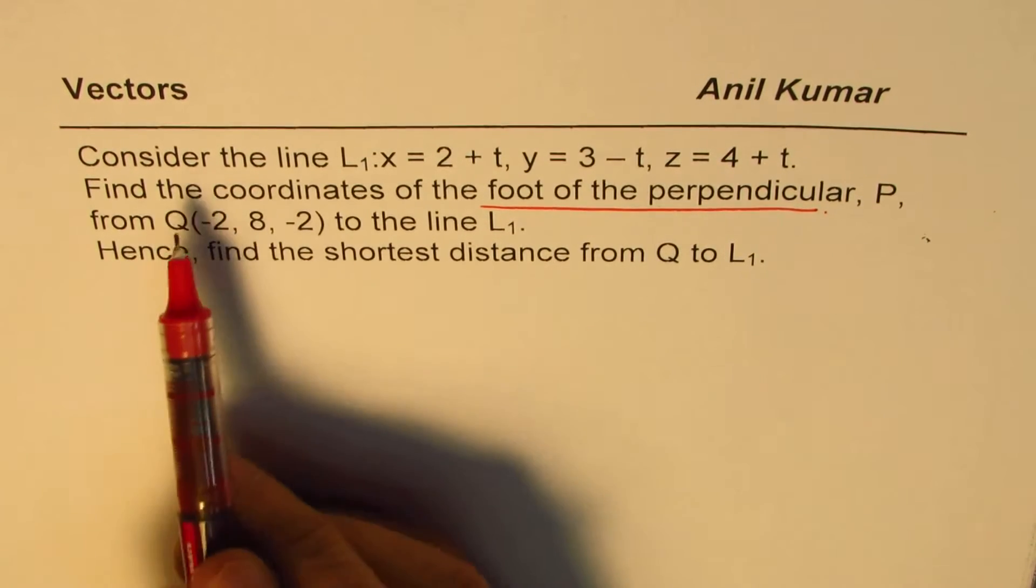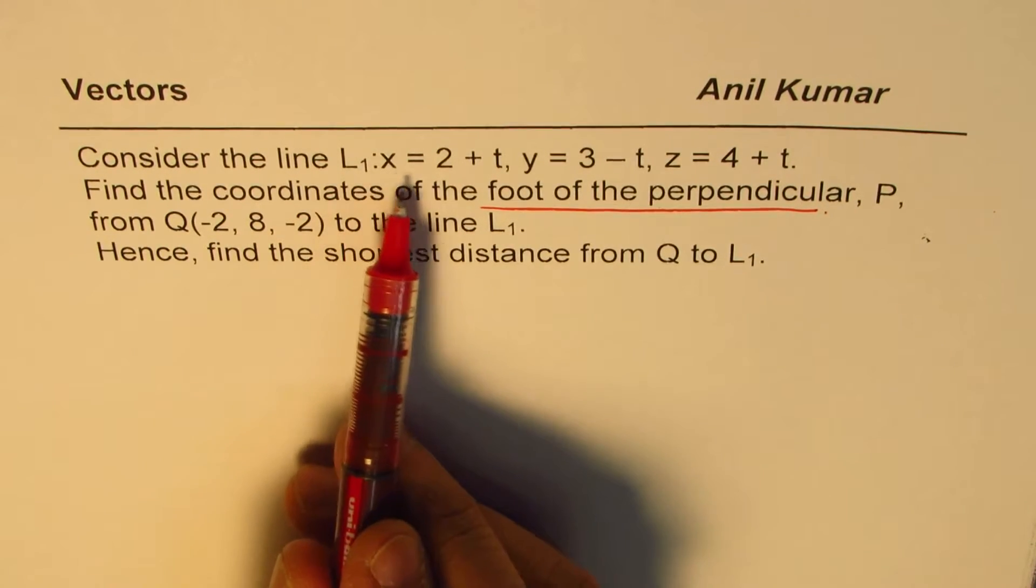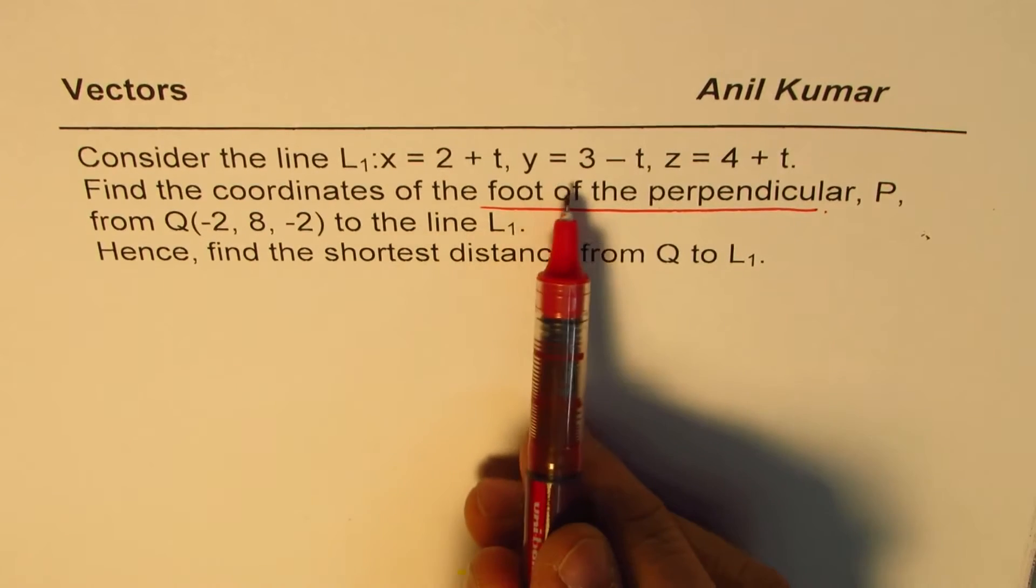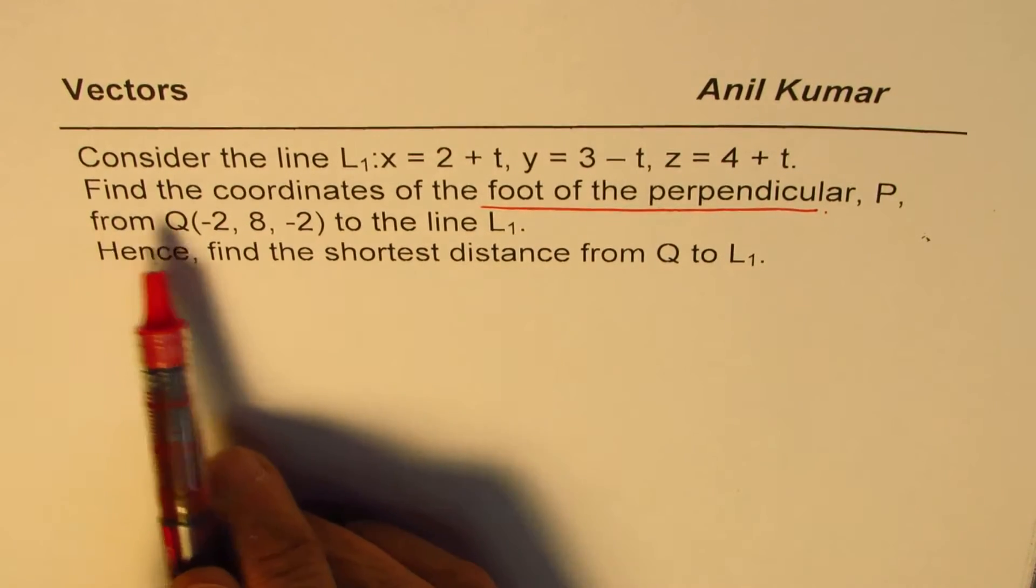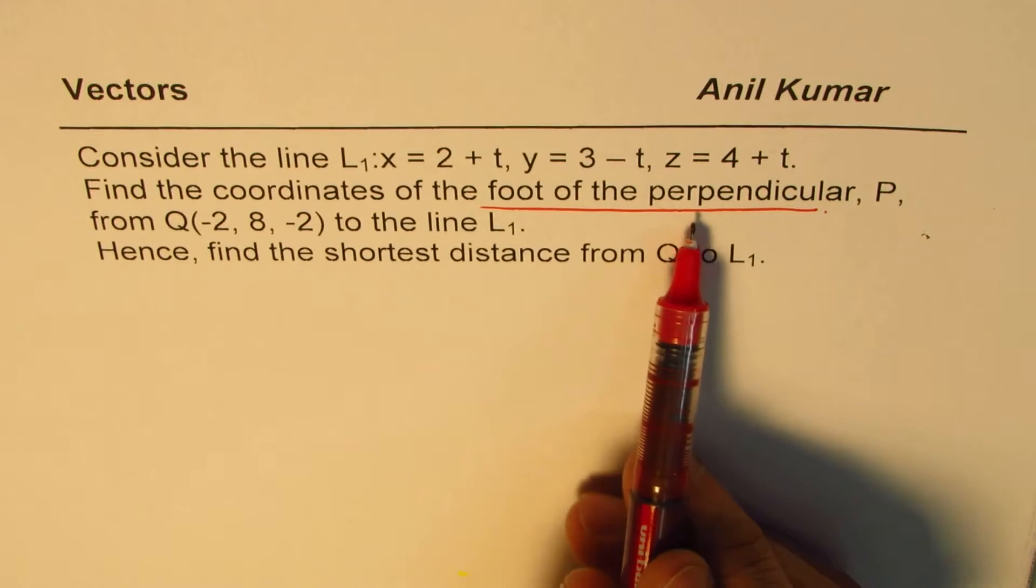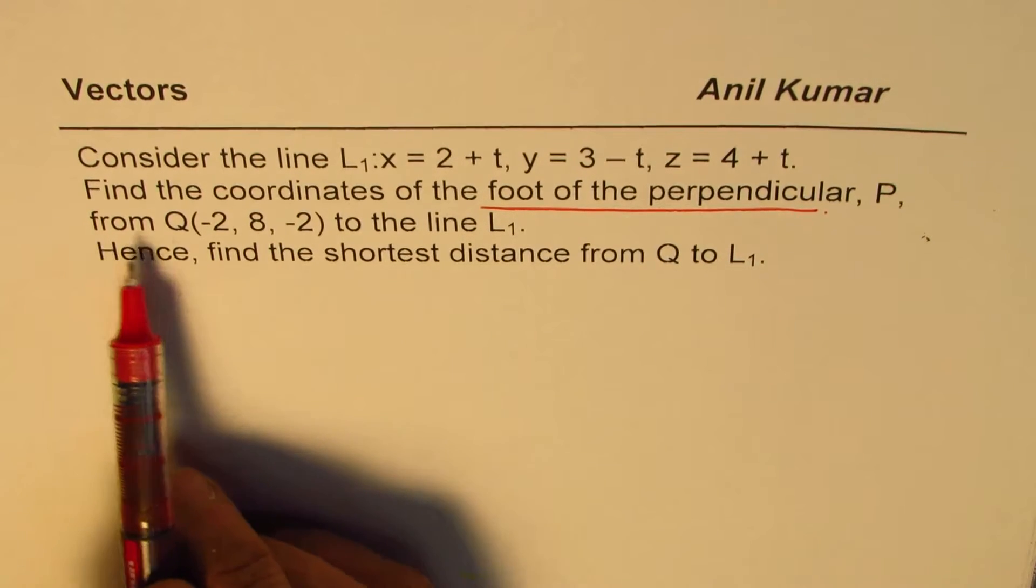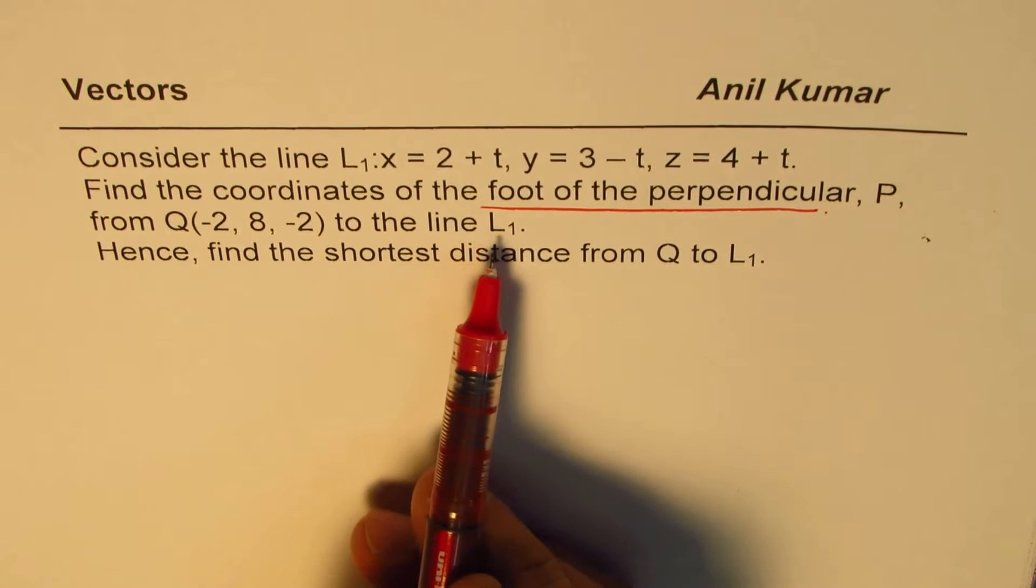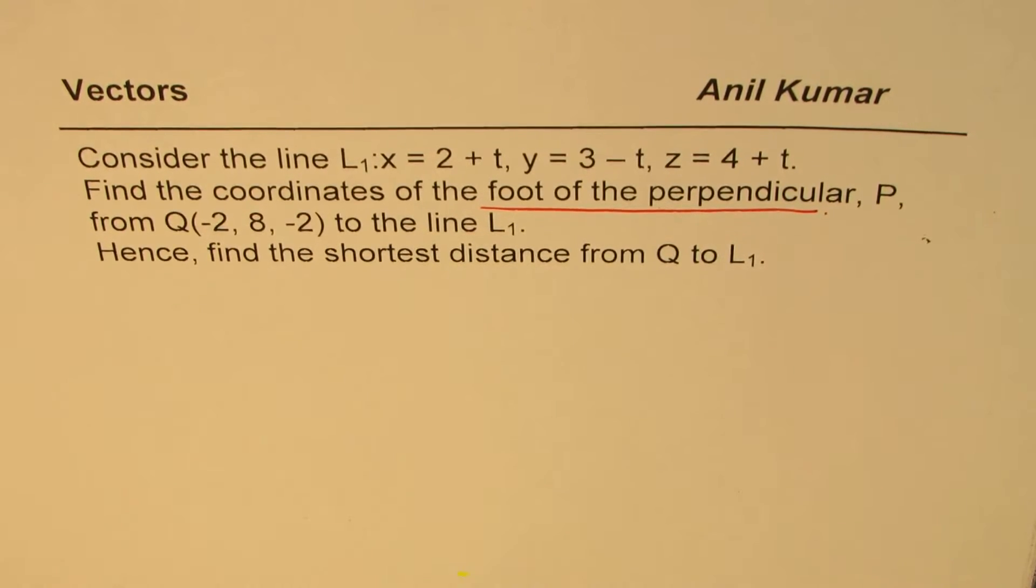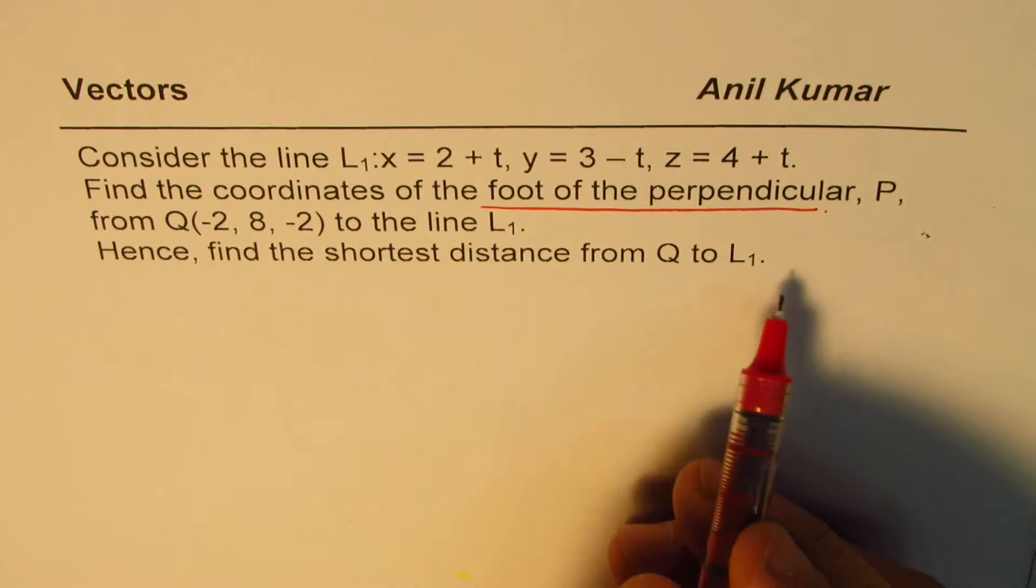The question here is, consider the line L1: x equals 2 plus t, y equals 3 minus t, z equals 4 plus t. Find the coordinates of the foot of the perpendicular P from Q(-2, 8, -2) to the line L1. Hence, find the shortest distance from Q to L1.